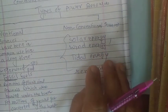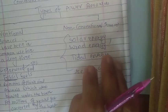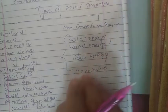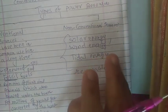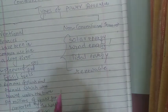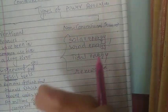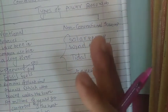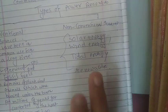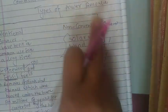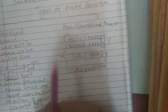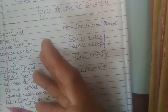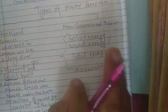So if we continue using conventional sources at this rate, one day they will be exhausted. Moreover, their use causes environmental pollution — for example, petroleum use creates pollution as a side effect. Therefore, there is a need for using non-conventional sources, as conventional sources are being heavily consumed and will be depleted.